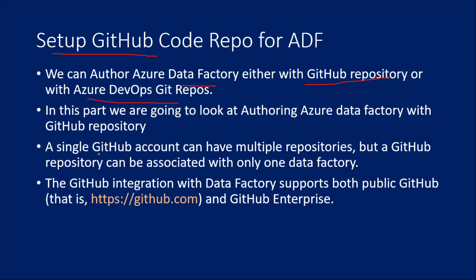In this video, we are going to look at authoring our Data Factory with a GitHub repository. One small point to remember: if you have a GitHub account, you can have multiple repositories, but you can associate only one repository with one Azure Data Factory. You cannot associate multiple Data Factories with the same repository. Also, you can use both the public GitHub version, which is free at GitHub.com, or the GitHub Enterprise version.